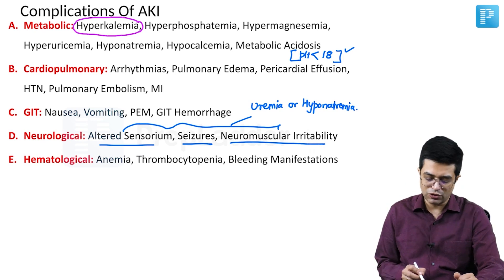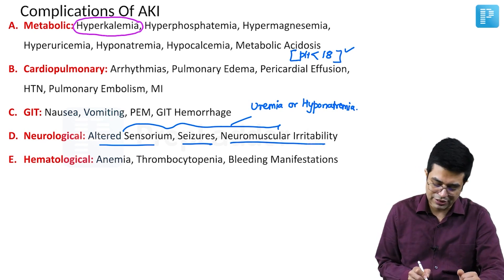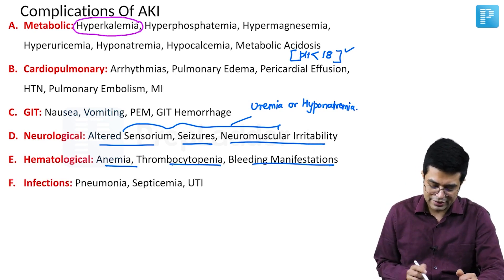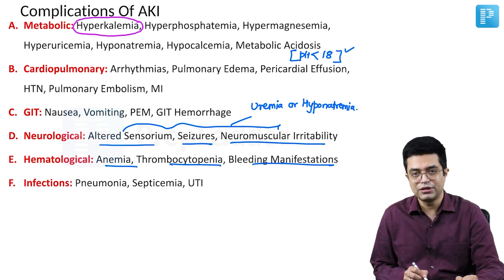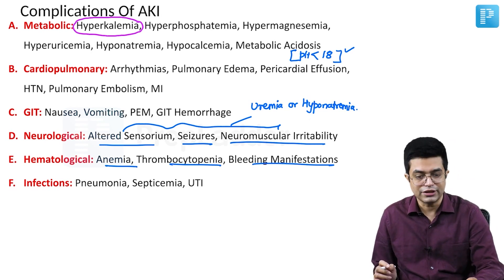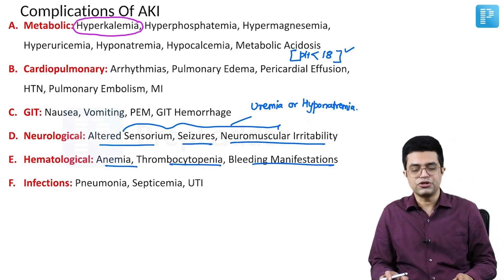And then we have hematological abnormalities like anemia, thrombocytopenia, and bleeding manifestations. Infections can also happen, like pneumonia, septicemia, and UTI. So these are the complications of AKI.